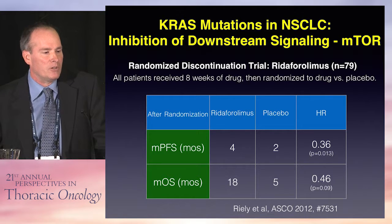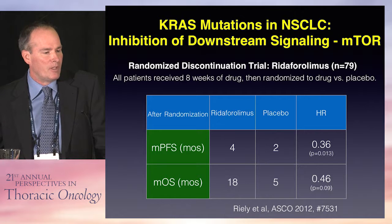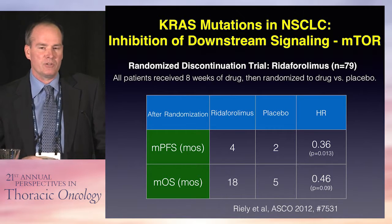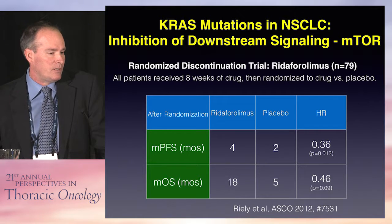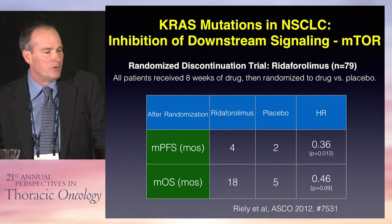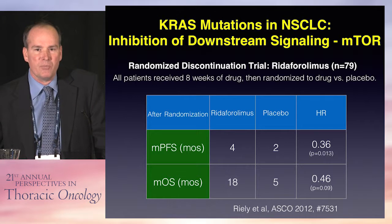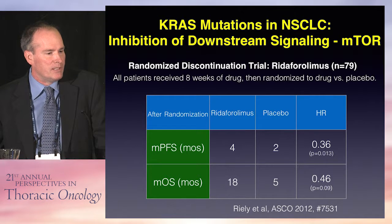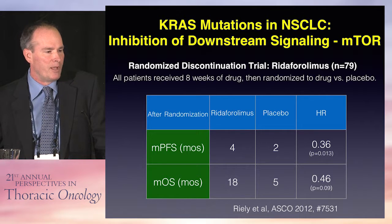This was an interesting trial looking at an mTOR inhibitor, ridaforolimus. It was a discontinuation trial of about 80 patients. All patients received eight weeks of the mTOR inhibitor and were then randomized to either continue on the drug or placebo. There was at least numerically some improvement in median overall survival in patients who continued on the drug. Unfortunately, there hasn't been much more done with this compound, and right now it doesn't appear to be moving forward. But it does raise the idea of using mTOR inhibition as a possible treatment pathway for KRAS disease.